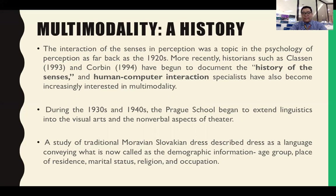The study of traditional Moravian-Slovakian dress, for example, described dress as a language conveying what is now called demographic information: age, group, place of residence, marital status, religion, and occupation. So before, the way a person dressed could also be an interesting topic for multimodal discourse analysis.